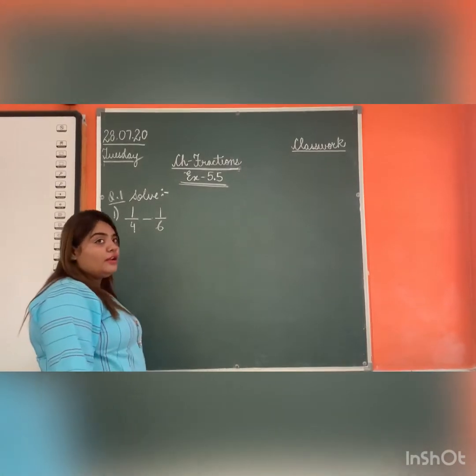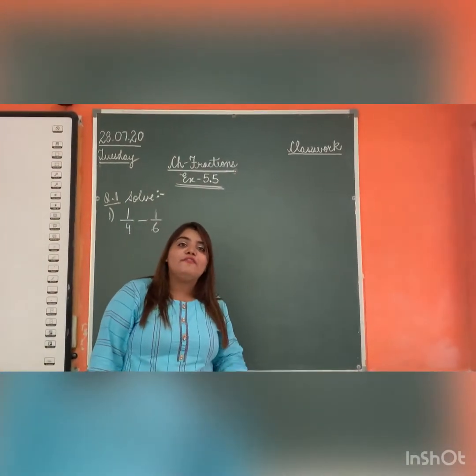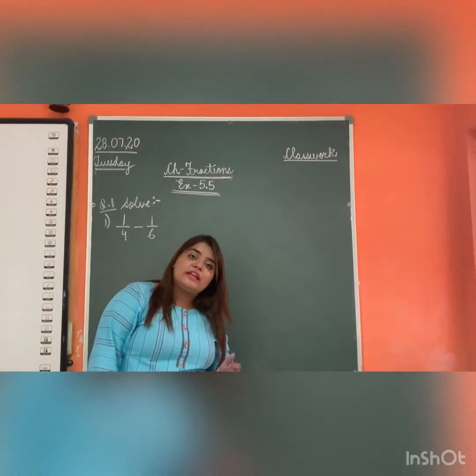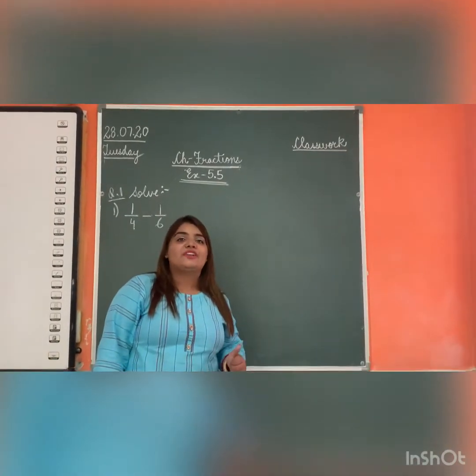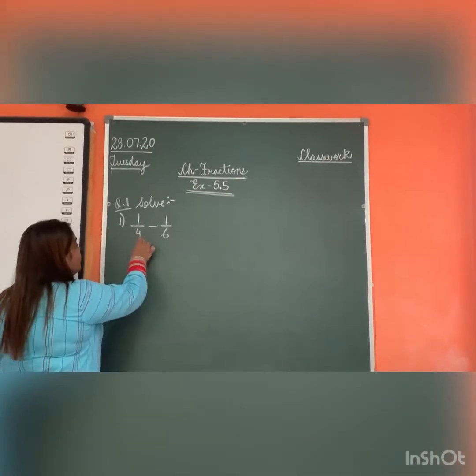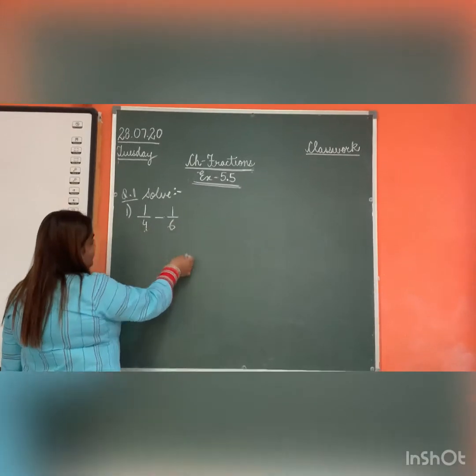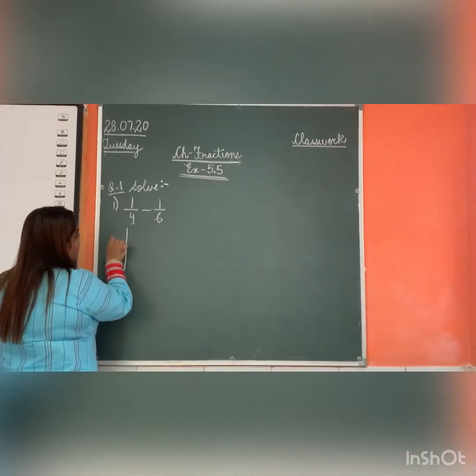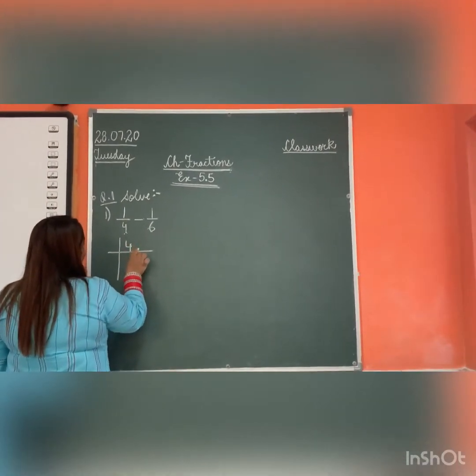As we have done earlier, if I am adding fractions, similarly we will be doing the subtraction. You have the unlike fractions. Again, you will take the LCM of 4 and 6.